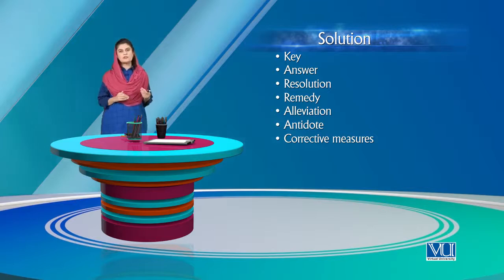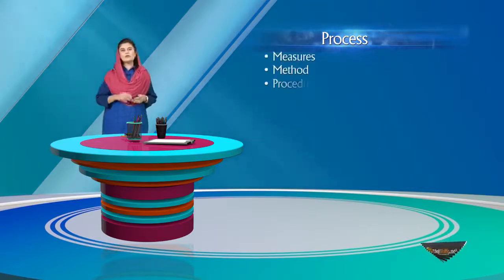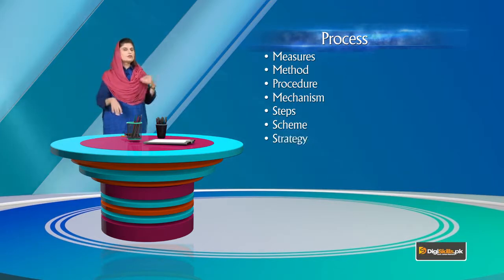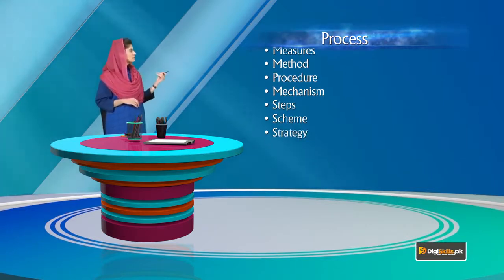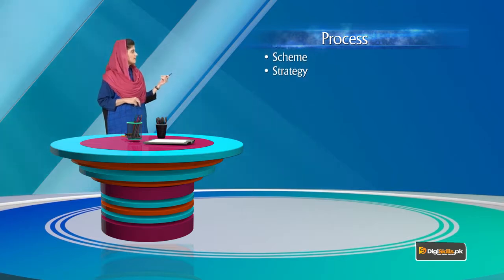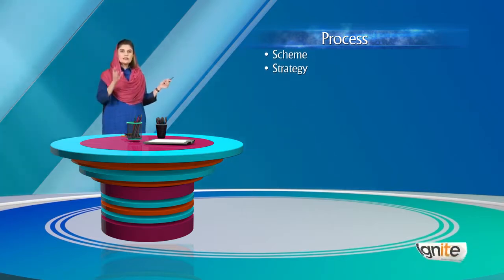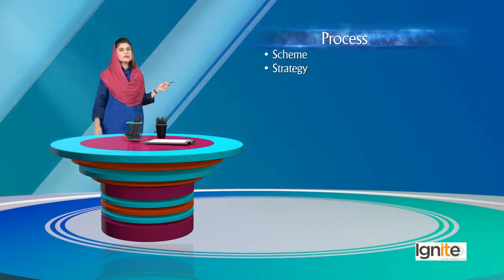Other alternatives include antidote and corrective measures. If you want to refer to a process without repeating the word every time, you can use: measures, method, procedure, mechanism, steps, scheme, or strategy. Again, the meanings are slightly different, so look them up and then use them if you are already familiar with them.